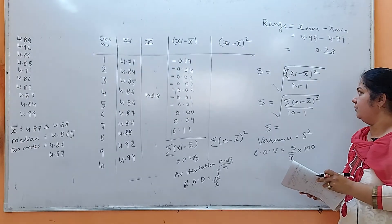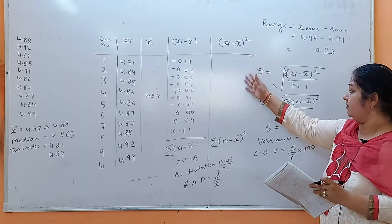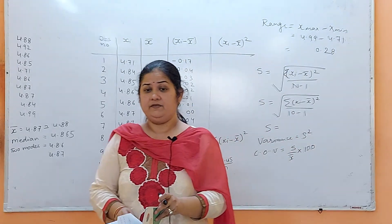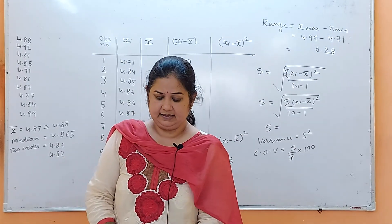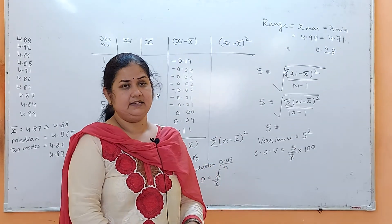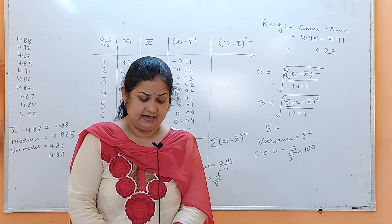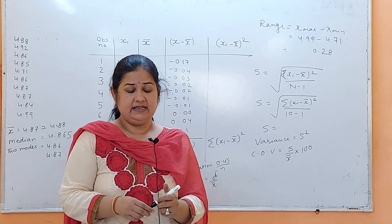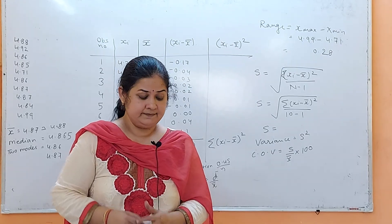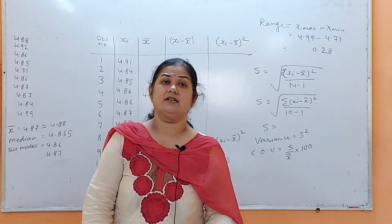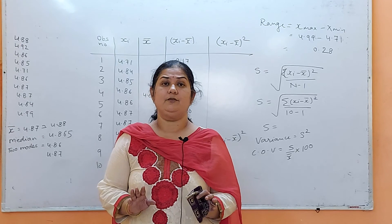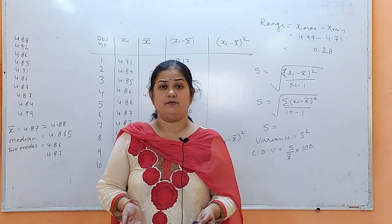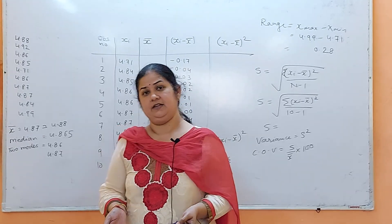So these were the two numericals. Work them out and find the answers. In the next lecture, we will move on to the distribution of random error, that is the Gaussian curve, and see its characteristics. This unit is full of numericals — every next lecture we will be solving numericals. Thank you.